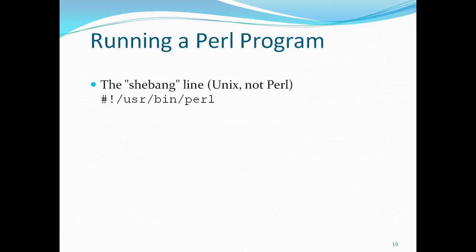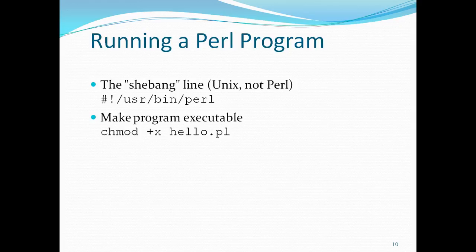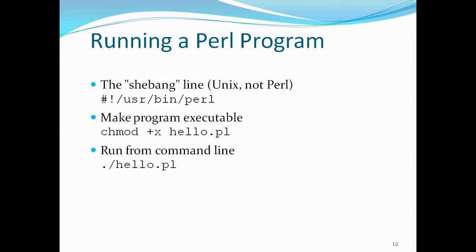One important point is the shebang line. If you are running this Perl script on UNIX, you use a shebang line: #!/usr/bin/perl. This means the Perl application is installed in that root directory, and whenever the script runs it goes to that directory to execute. Make sure you also give the file executable permission.